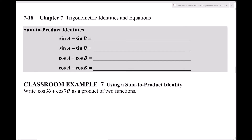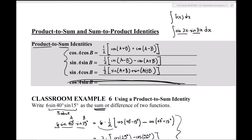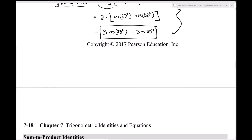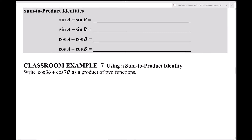Now sum-to-product: what if I have the sum of two sinusoids and I don't want them written as a sum? You can go backwards to a product. There's a way to use these formulas to go backwards, and it's kind of involved. Let's look at what the formulas are.